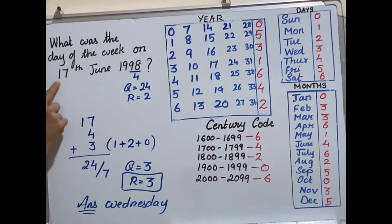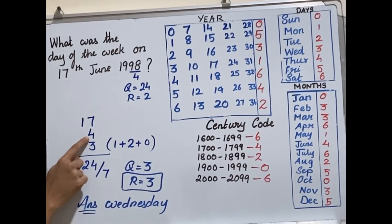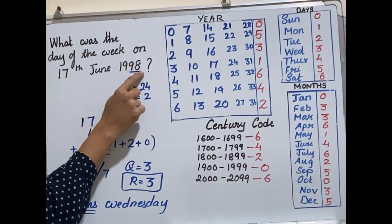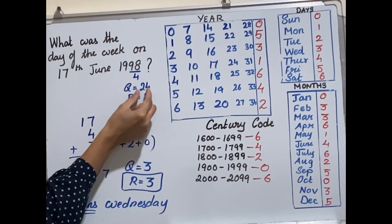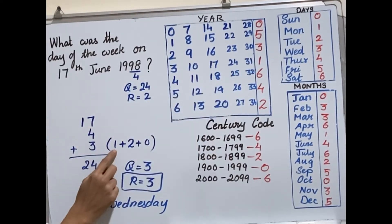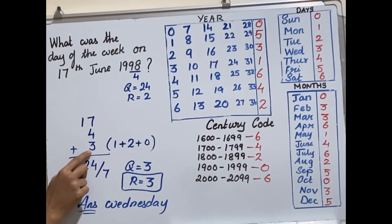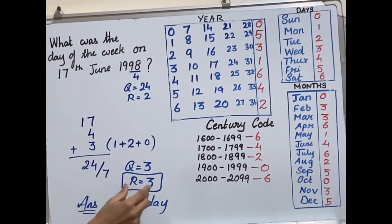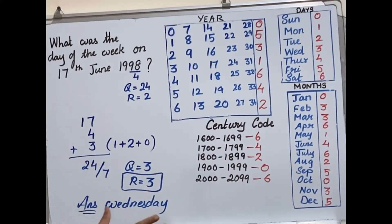To summarize the method: take the date, add the code for the month, then for the year take the last 2 digits divided by 4, find the code for the quotient, add the remainder and the century code to get the year value. Add everything, divide by 7, and the remainder gives the day of the week.